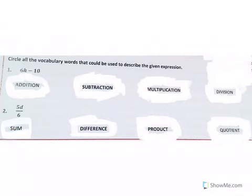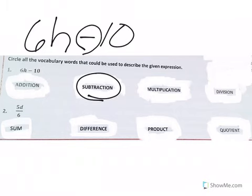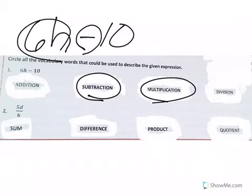So circle the vocabulary words that can be used to describe a given expression. This first one is kind of hard to see, but it's 6H minus 10. So we do see subtraction here. 6H is multiplication, so we see that. We don't see division. We don't see addition. So there you go.